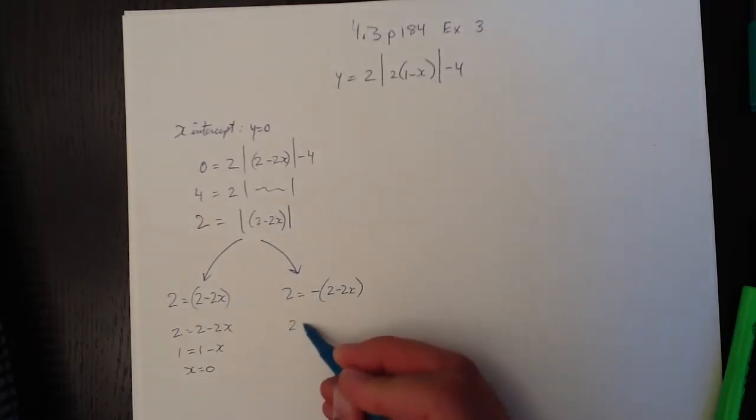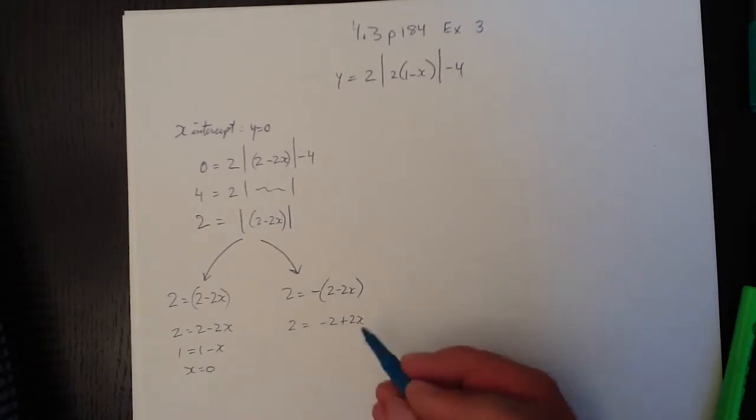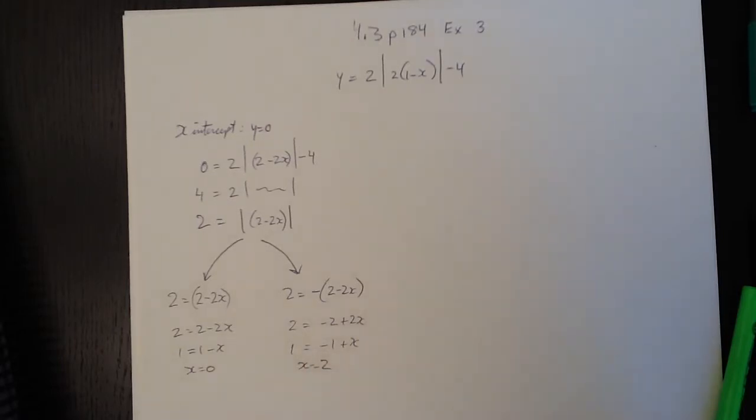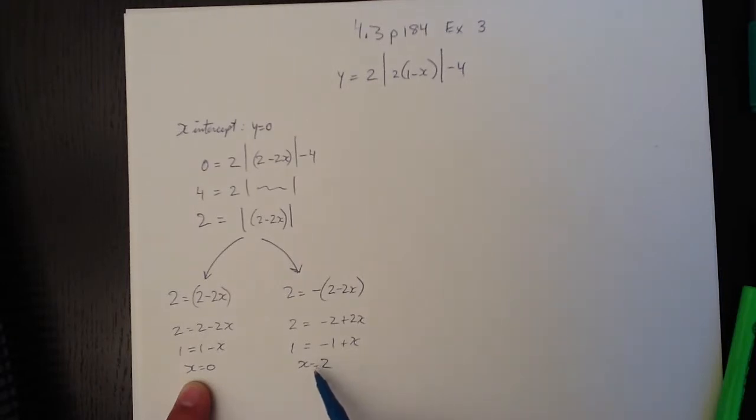And in this case, 2 equals negative 2 plus 2x. And then divide the whole thing by 2 again and we get 1 equals negative 1 plus x. And therefore, well, we can see right now x equals 2. So those are our two values for x where we have intercepts in the x-axis.